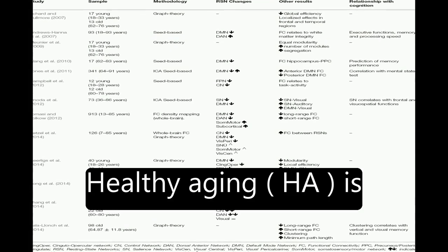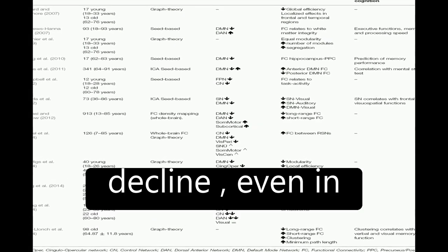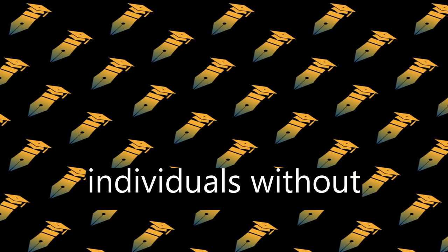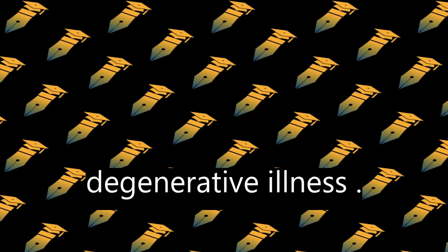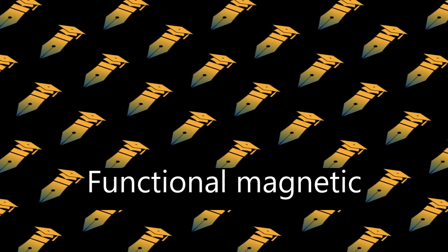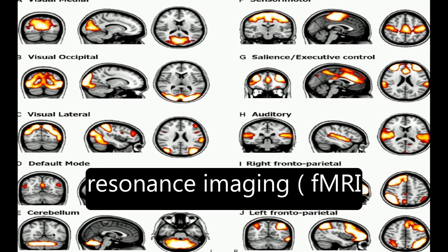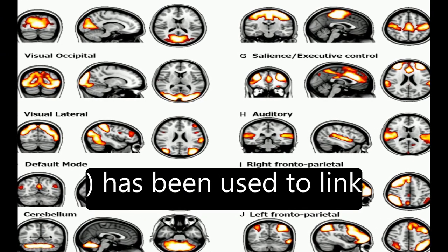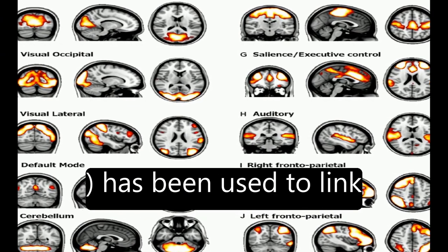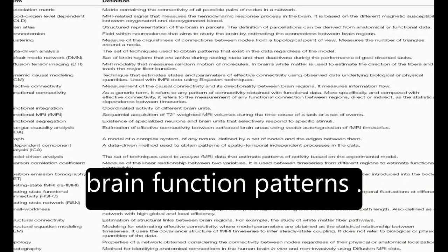Healthy aging (HA) is associated with cognitive decline, even in individuals without degenerative illness. Functional magnetic resonance imaging (fMRI) has been used to link this decline with altered brain function patterns.